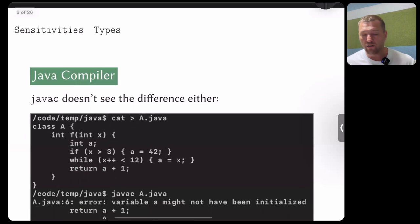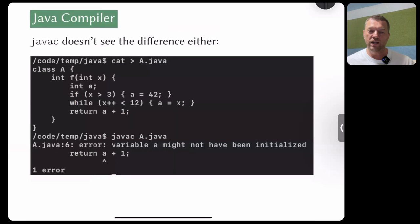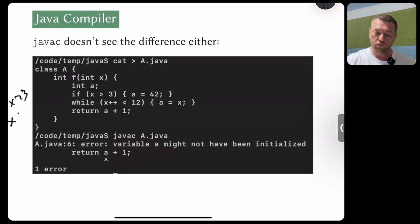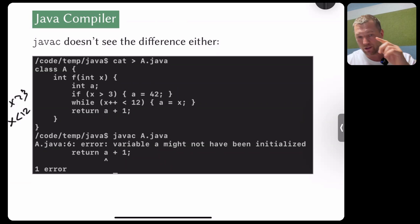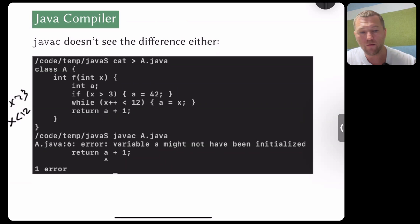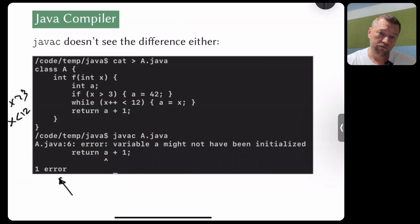The Java compiler over-approximates: it thinks there is a probability of A being uninitialized and refuses to compile. It's not a warning — it's an error, a definite rejection. The Java compiler uses data flow analysis, but it's not strong enough because it doesn't understand that the ranges x > 3 and x < 12 overlap, guaranteeing A is always initialized. How would you implement this functionality if you were writing a Java compiler?